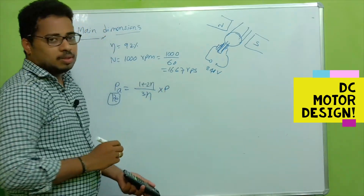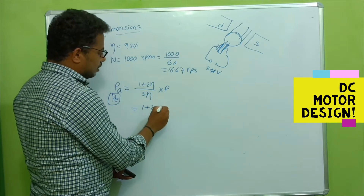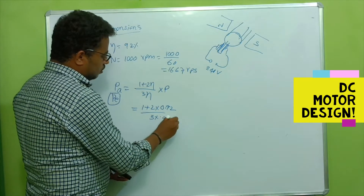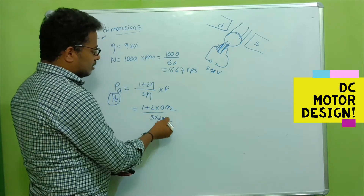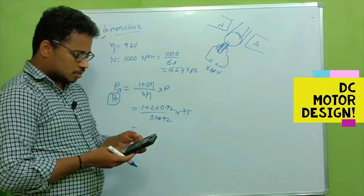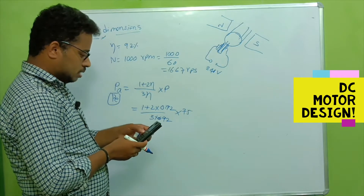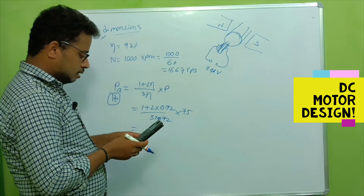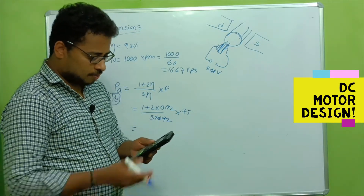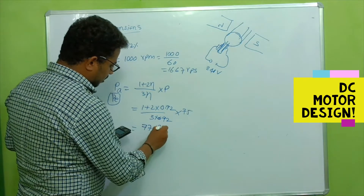Let's substitute the efficiency value. Efficiency η is 0.92, and P is 75 kW. So we calculate: (1 + 2 × 0.92) / (3 × 0.92) × 75, which gives us 77.173 kilowatts. This is the armature power developed.